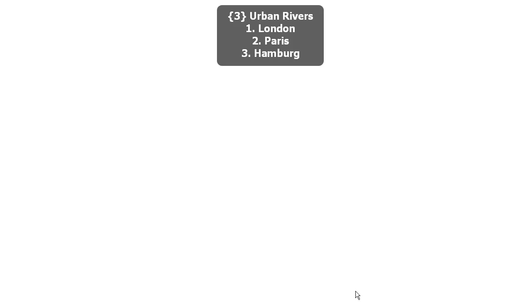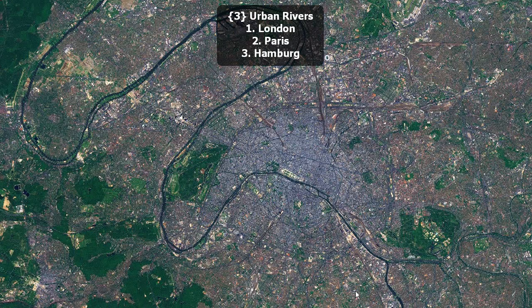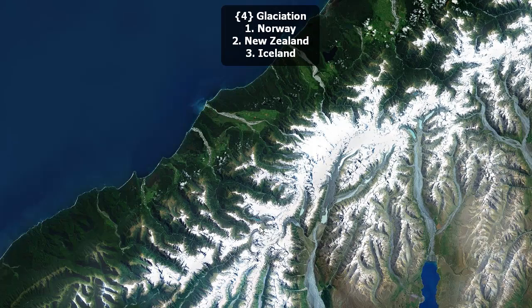What clues about the river pattern here indicates whether this is London, Paris, or Hamburg? Here's some glaciation. Is this Norway, New Zealand, or Iceland?